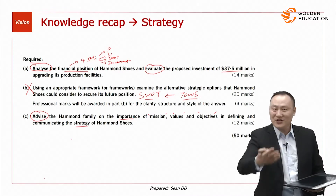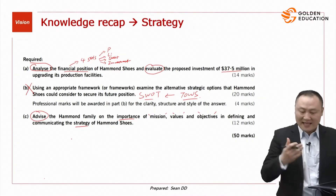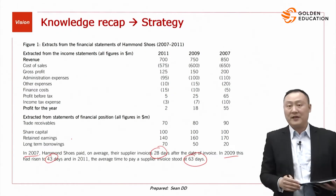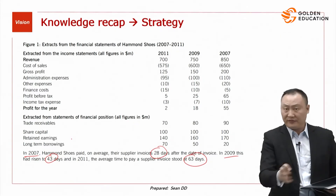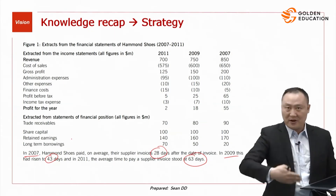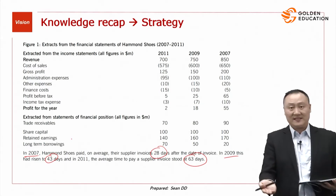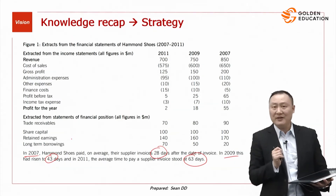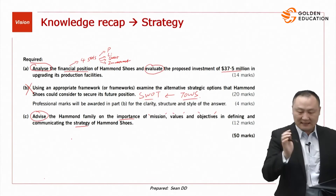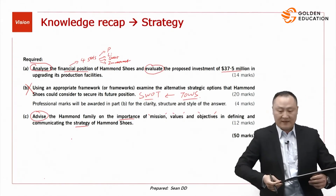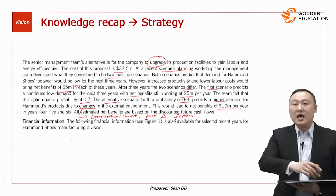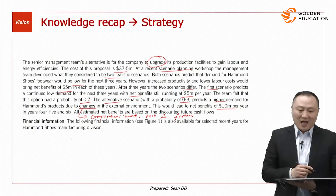The alternative scenario, with a probability of 0.3, predicts higher demand for Harman's products due to changes in the external environment — perhaps competitors moving out or technology changes — leading to net benefit of $10 million per year in years 4, 5, and 6. All estimated net profits are based on discounted future cash flows. In our strategy-level exam, the calculations are straightforward — what matters is the reasoning and logic behind them. This is requirement A, using the decision tree model from F2.